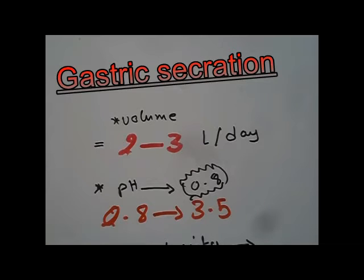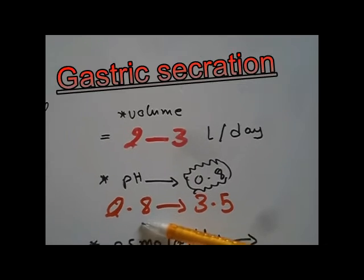Hi, today I will talk about gastric secretion. The volume of the gastric juice is from 2 to 3 liters per day. The pH is from 0.8 to 3.5, with maximum acidity at 0.8, so very high acidity.